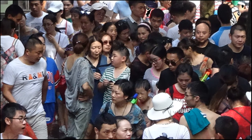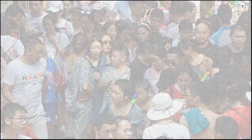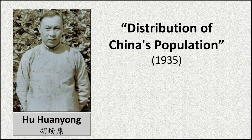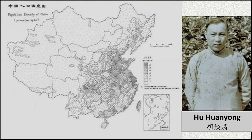To answer that question, in the mid-1930s, a Chinese academic named Hu Huanyong wrote a paper titled Distribution of China's Population. Using an imaginary line that bisects China, he presented the conceptual explanation that makes the unequal distribution of China's population easy to visualize.